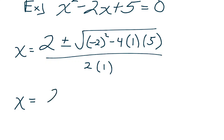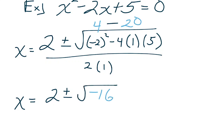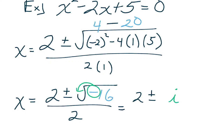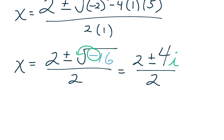How does it simplify? Negative 2 squared is 4, and 4 times 1 times 5 is 20. So I get 4 minus 20 — that's negative 16. It's not a big deal; it's just the square root of a negative number. The negative sign comes out as i, and the square root of 16 simplifies to 4. Careful — I've seen students just write 16, but take the actual square root. That gives 2 plus or minus 4i over 2.